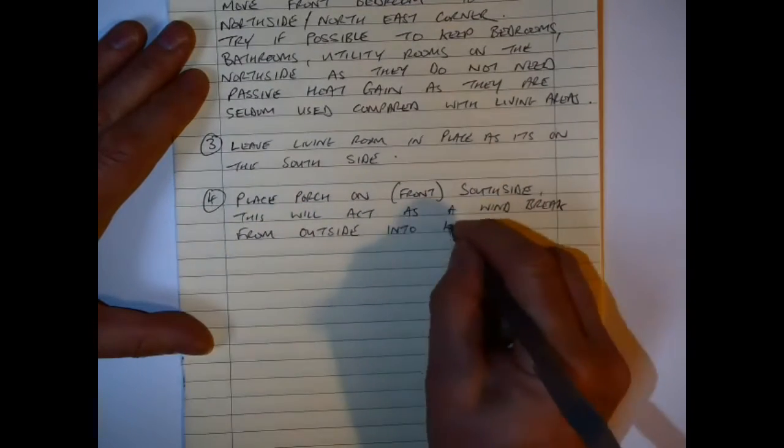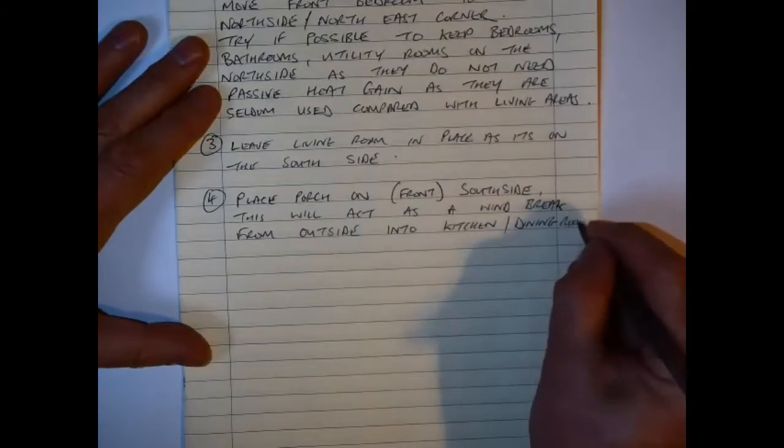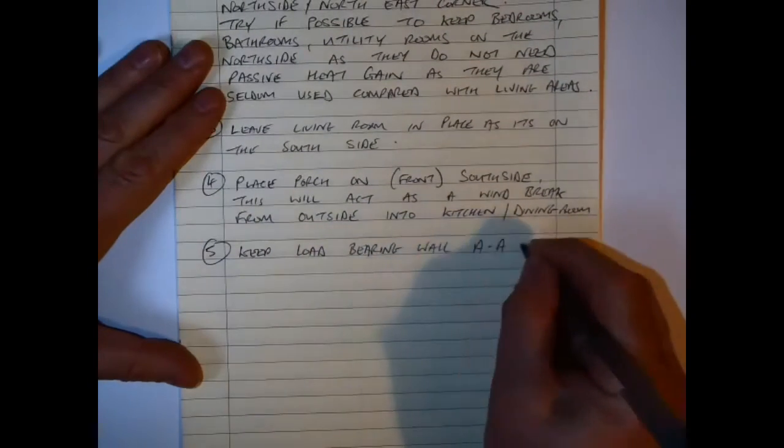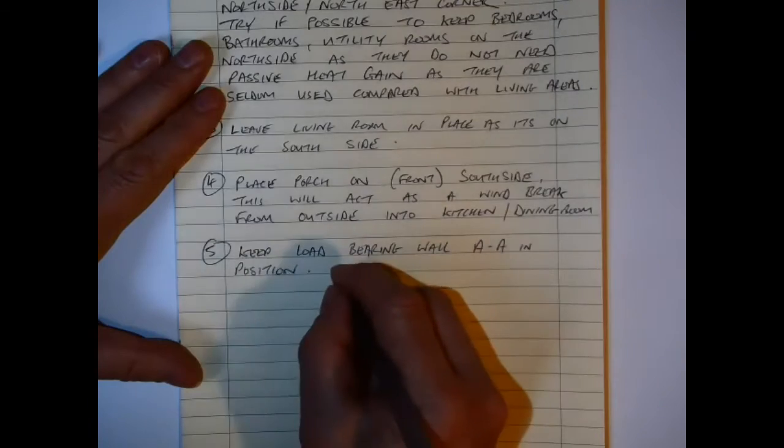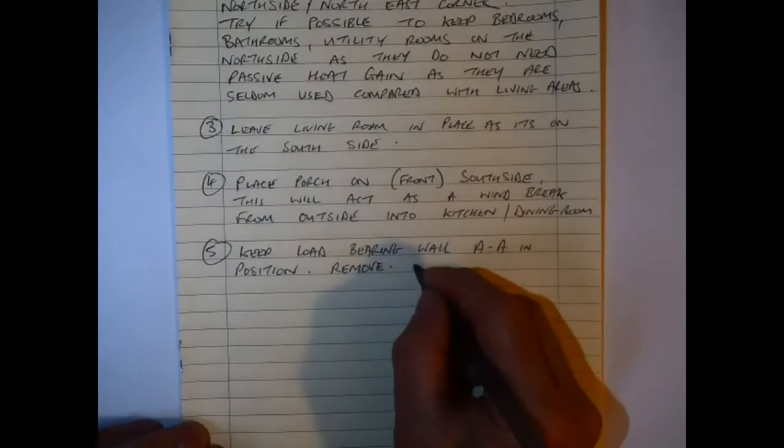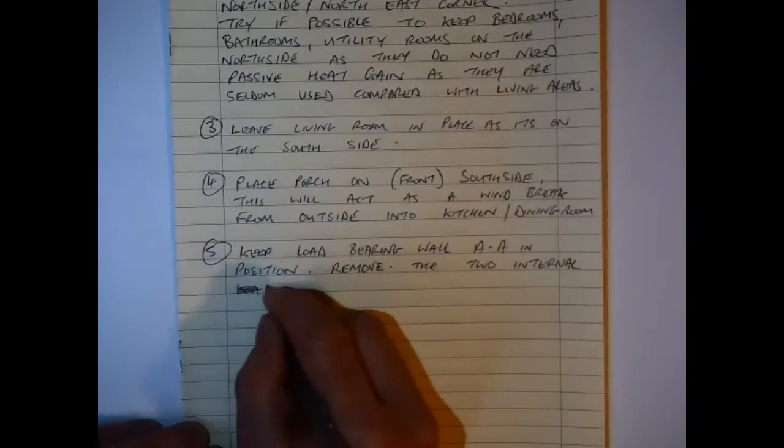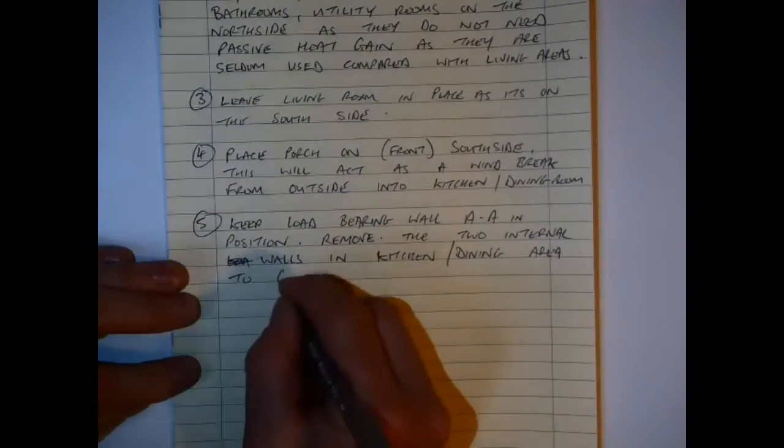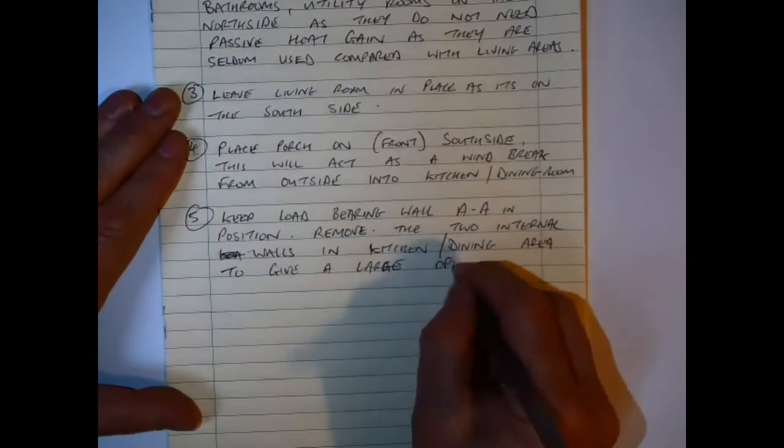Place the front porch on the south side as well to act as a windbreak from the outside to the kitchen-dining room. And I want to keep the load bearing wall in position and I remove the two internal walls in the front area - the kitchen-dining room area - to give a large open plan area which allows the light and heat right into the living area. And the stove is also still remaining in a central position.